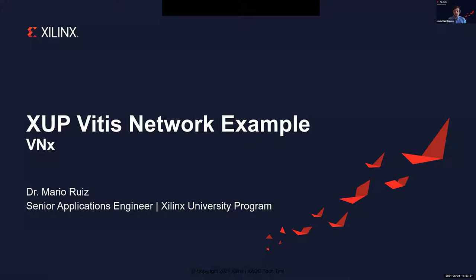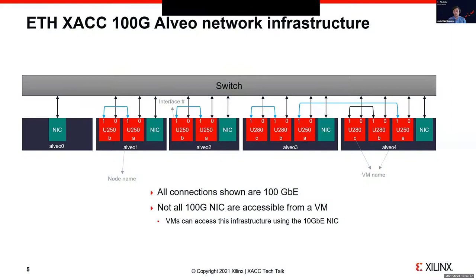Welcome everyone — this session is all about scaling out your applications. I'll be talking about the Vitis Network Example, or VNX, and I'm part of the Xilinx University Program. A year ago we introduced the Xilinx Adaptive Compute Cluster. At ETH Zurich there are five nodes: one dedicated for development and four for deployment of accelerators. Among those nodes there are 10 Alveo cards between U250 and U280. Each Alveo card has two networking interfaces — one connected to the network switch and one connected to its neighbor — giving researchers a lot of flexibility.